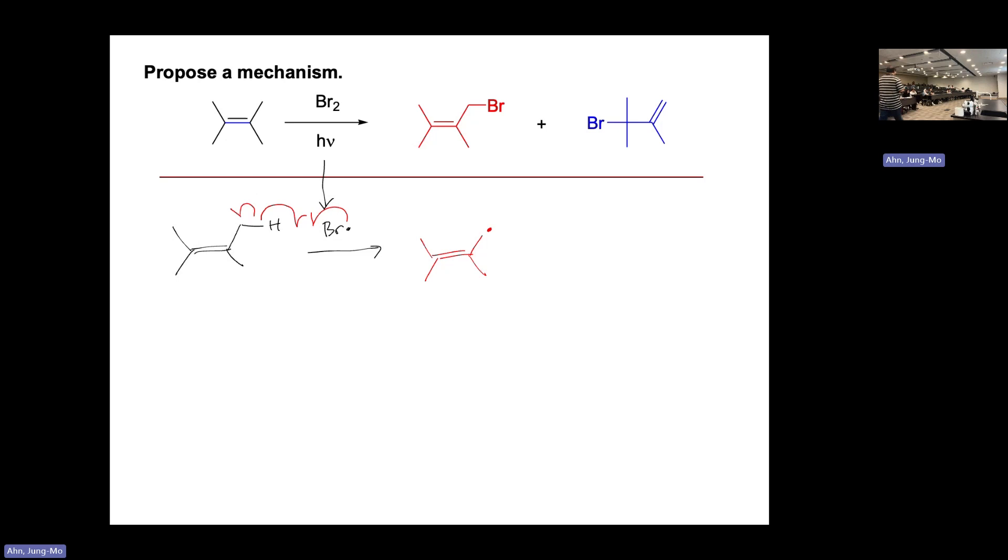This will go for the second propagation step, meaning that the bromine is going to be picked by the carbon radical and then the bromine radical will form later. So this will put the bromine at this position. So this is how we think that product is formed. It's very reasonable. So that part is very easy.